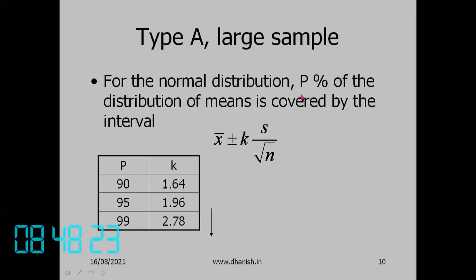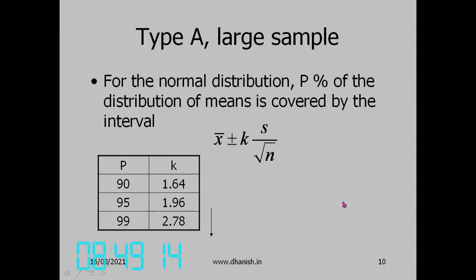For a normal distribution, p percent of the distribution of means is covered by the interval x̄ ± k·(s/√n). For 90% coverage, k = 1.64. For 95% coverage, k = 1.96. For 99% coverage, k = 2.58. This gives the coverage interval for Type A large sample.